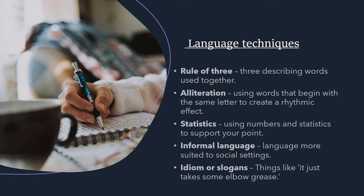Statistics are where you use numbers to support your point - and you are allowed to make up these statistics, you don't have to memorize them. For example, '25% of people managed to pass their level 2 functional skills writing exam after listening to this video.' Next is informal language, which is language more suited to social settings. And finally, idioms or slogans - things like 'it just takes some elbow grease.'